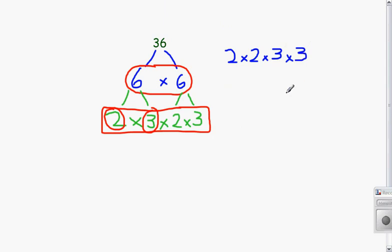I'm going to combine these into exponential form. So thinking back to exponents, 2 tells me the number I'm multiplying together, and my exponent tells me how many times I'm multiplying 2. 2 to the second power.